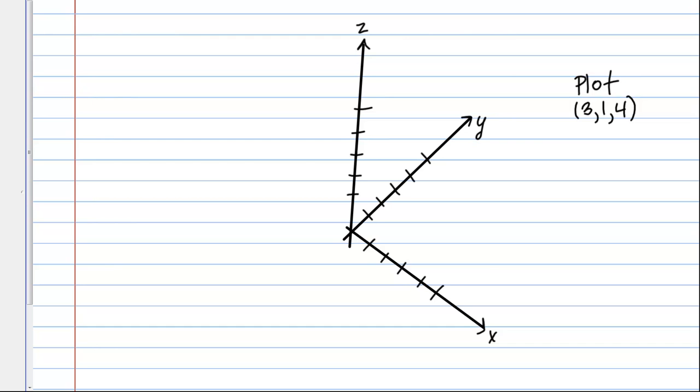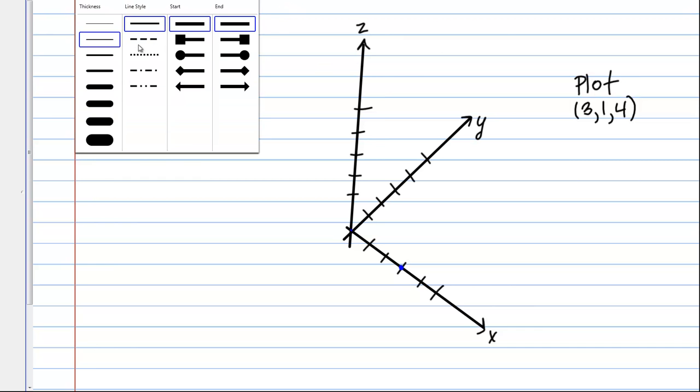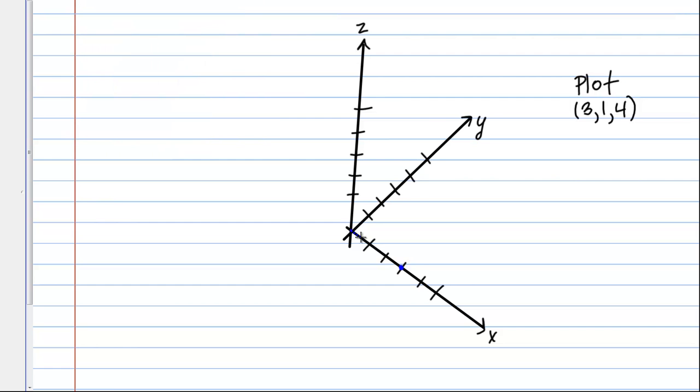So first, you can start by going three units in the X direction, so that would get me to this point here. And I'm going to connect all my steps by dotted lines, and that will help me show that three-dimensional flavor to this. So I've gotten three units in the X direction.